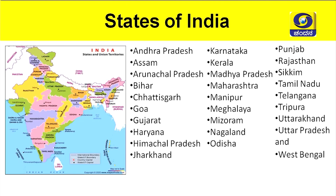Observe the map. You have to locate all the states. The 28 states of India are: Andhra Pradesh, Assam, Arunachal Pradesh, Bihar, Chhattisgarh, Goa, Gujarat, Haryana, Himachal Pradesh, Jharkhand, Karnataka, Kerala, Madhya Pradesh, Maharashtra, Manipur, Meghalaya, Mizoram, Nagaland, Odisha, Punjab, Rajasthan, Sikkim, Tamil Nadu, Telangana, Tripura, Uttarakhand, Uttar Pradesh, and West Bengal. You have to learn to mention all 28 states as well as to locate them on the India map.